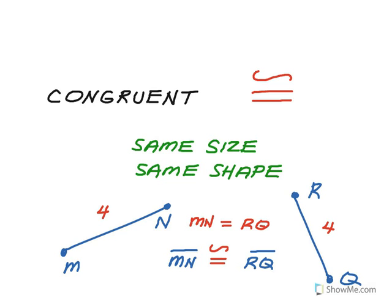So when I'm talking about the distances between the distance or the length of MN and the length of RQ, I generally use the equal sign. But if I'm talking about using the symbols, the physical segments MN and RQ, then we use the congruent sign.